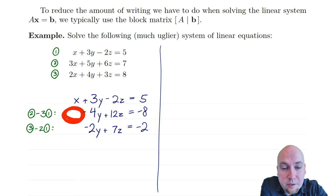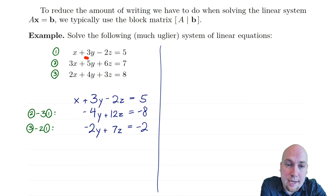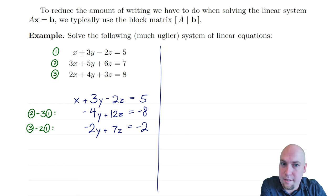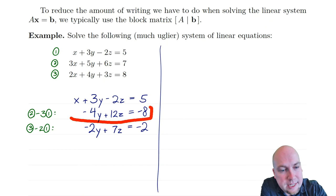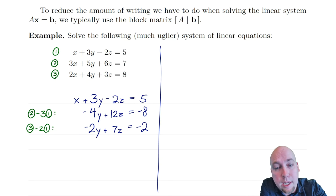Carrying out the operation: 3x minus 3x gives 0x. For the y terms: 5y minus 9y gives minus 4y. For z: 6z plus 6z — careful of the double negative — gives 12z. On the right-hand side: 7 minus 15 gives minus 8. So this is my new second equation. Then I do something similar for equation three to get rid of the 2x there as well.